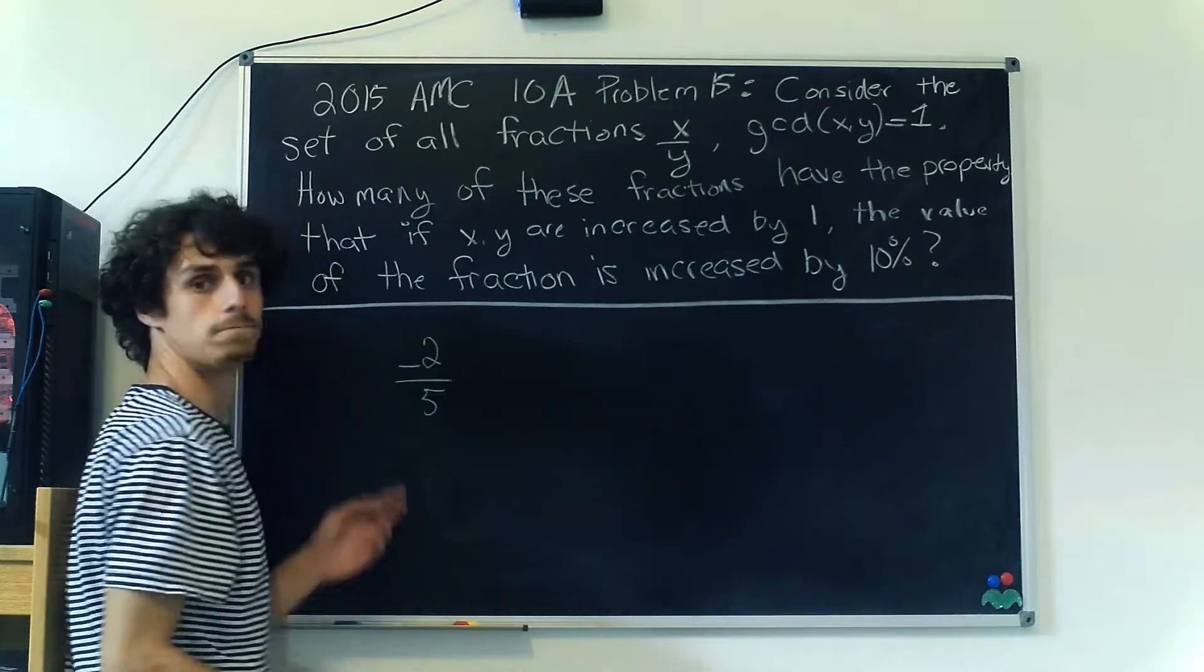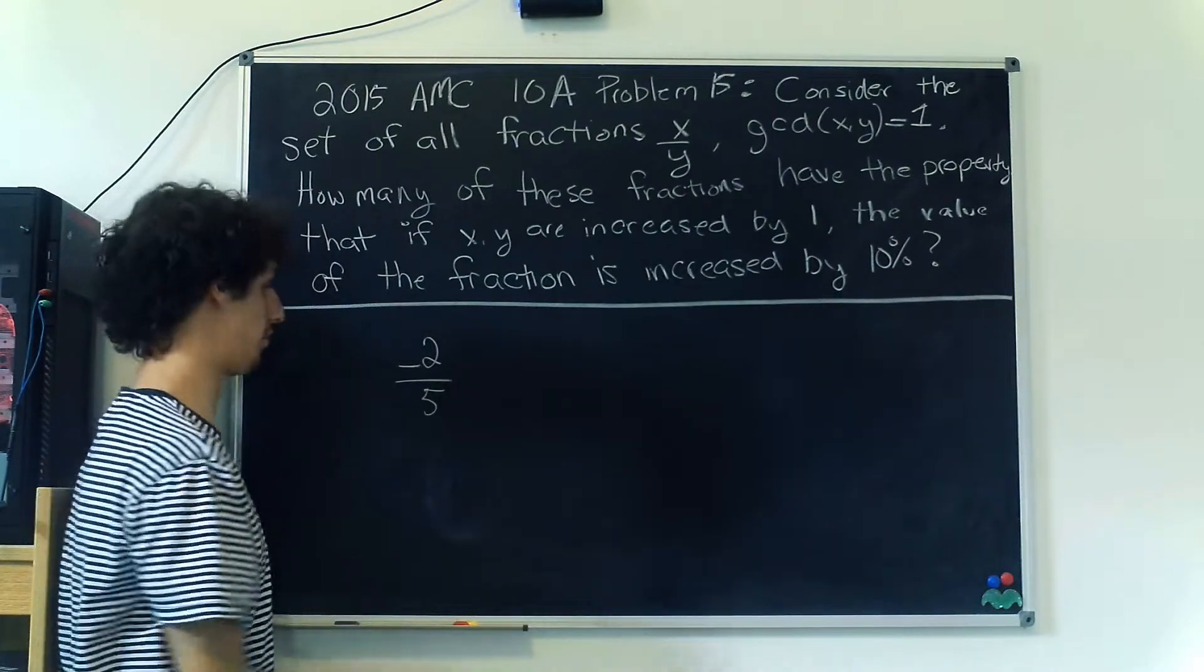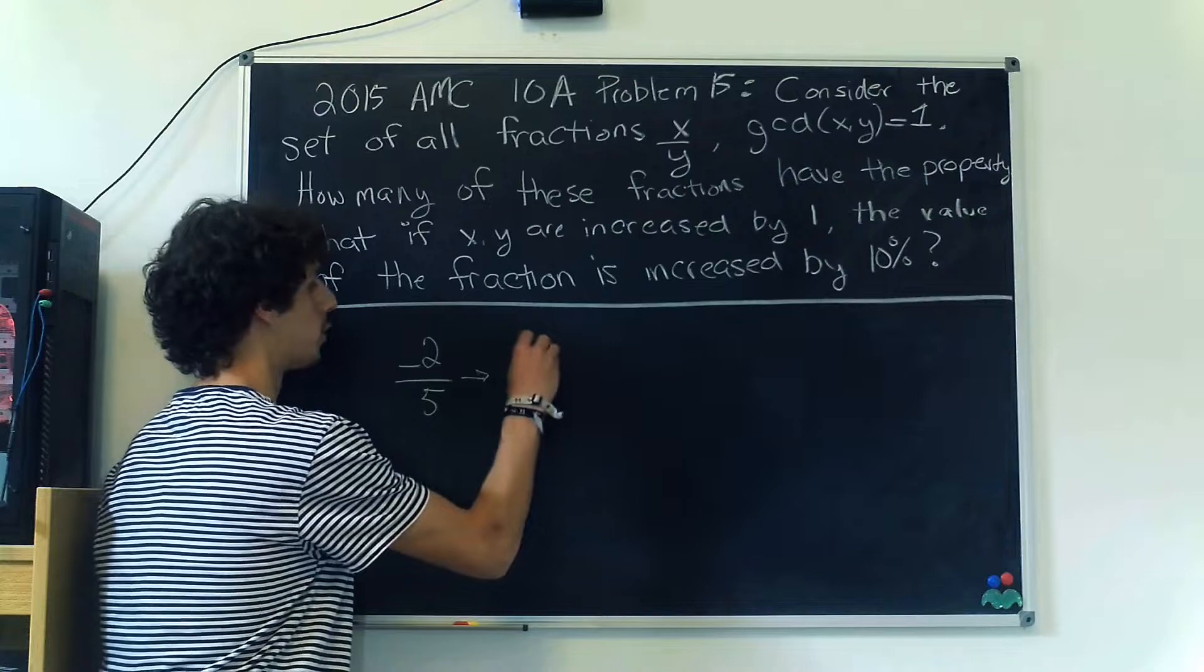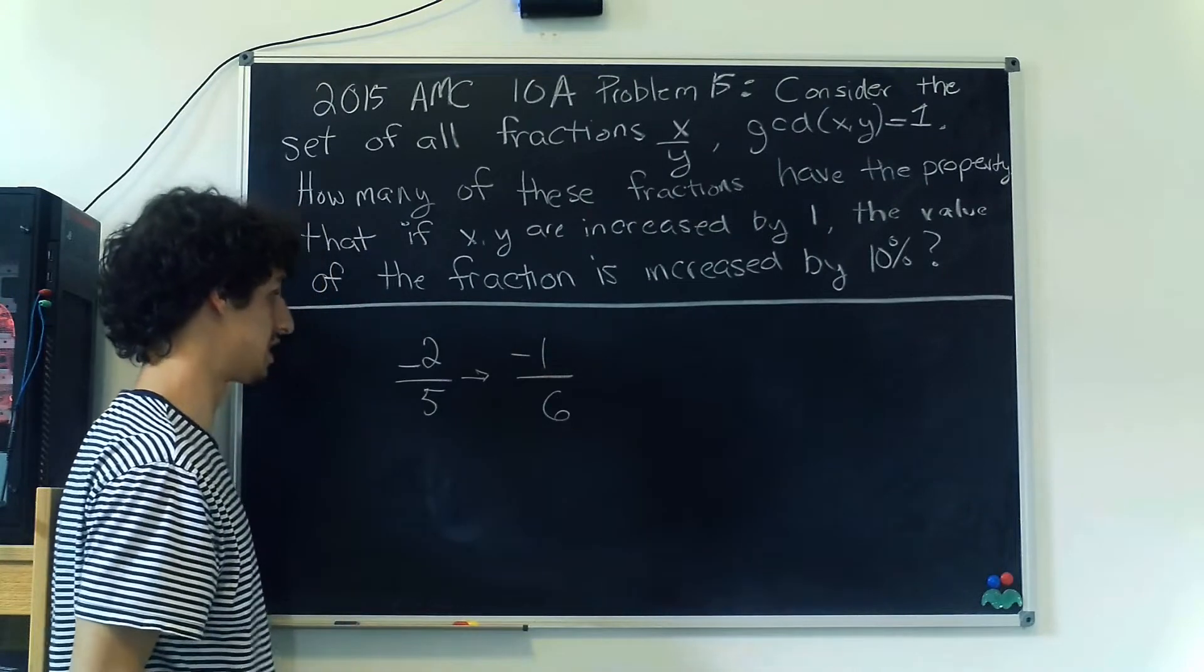Let's look at one more example. Here we have the example -2/5. If we increase both of these numbers by 1, we get -1/6.